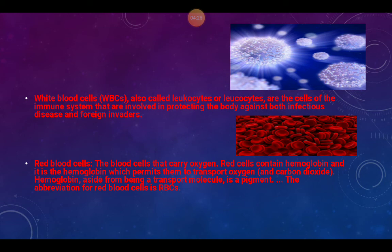Red blood cells carry oxygen. They contain hemoglobin, which allows them to transport oxygen and carbon dioxide. One drop of blood contains about two million red blood cells. Red blood cells are disc-shaped so that oxygen can move in and out quickly. Hemoglobin is not only a transport molecule but also a pigment — it gives blood its red color.